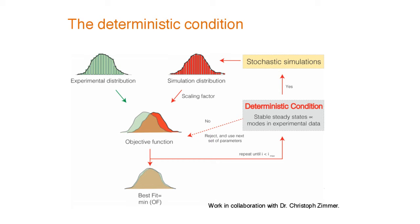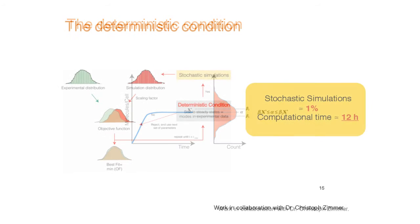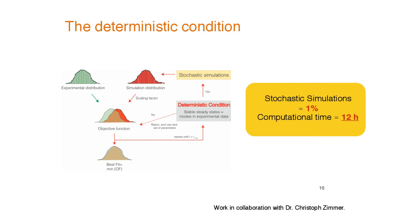Basically what the whole algorithm does is draw random parameters, test if the deterministic version has two steady states that roughly correspond to the peaks of the distribution, and only if that is true do you actually do the stochastic simulation, calculate the stochastic distribution, compare it to the objective function, and perform the parameter estimation.